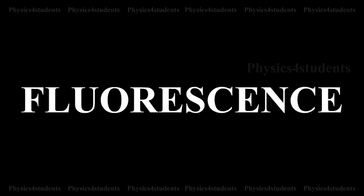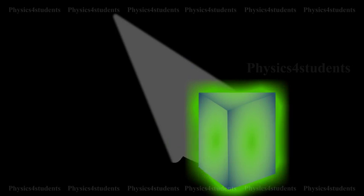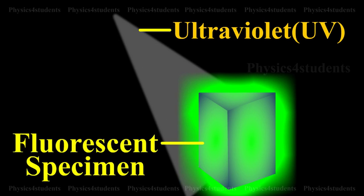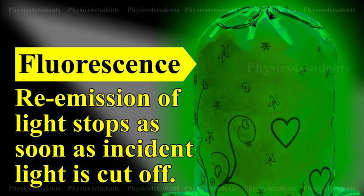Fluorescence. When an atomic or molecular system is excited into a higher energy state by absorption of energy, it returns back to a lower energy state in a time less than 10 raise to minus 5 seconds, and the system is found to glow brightly by emitting radiation of longer wavelength. When ultraviolet light is incident on certain substances, they emit visible light. It may be noted that fluorescence exists as long as the fluorescing substance remains exposed to incident ultraviolet light, and re-emission of light stops as soon as incident light is cut off.